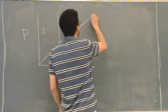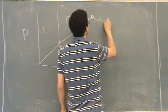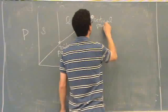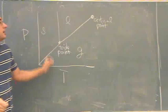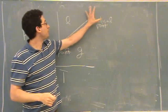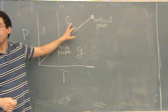This right here, you'd also have to remember, it's called the critical point. Above the critical point, this line is gone, and it's a mixture.